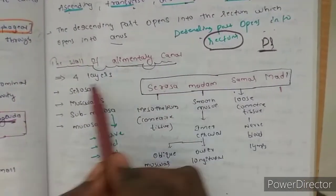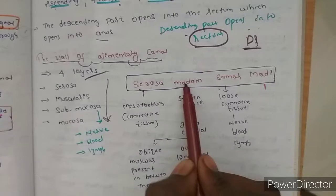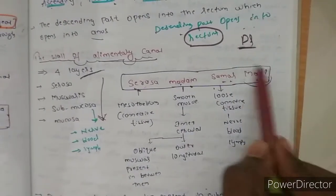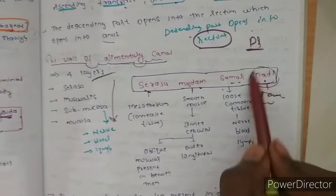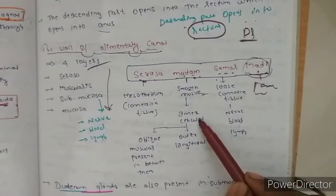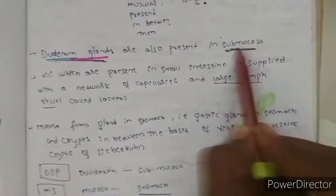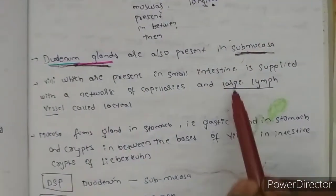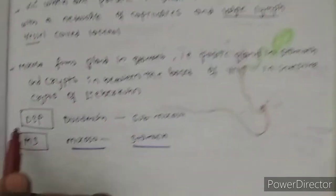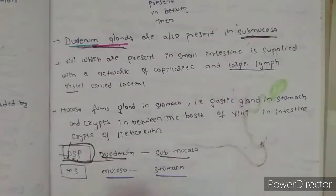You know that alimentary canal has four layers: serosa, muscular, submucosa, and mucosa. People will ask serially, you should remember. So 'Serosa Madam Sambar Madi.' Serosa madam, you know sambar madi means 'karo' or 'do' in Kannada language. Serosa is made up of mesothelium, and madam is smooth muscle. So inner circular and outer longitudinal. In between the circular and longitudinal, oblique muscular layer is present. These notes will be available.